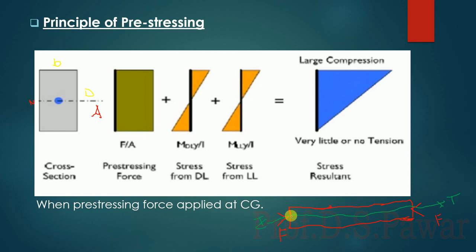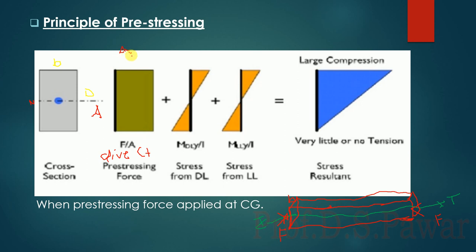The cross section of the beam has depth D and width B, so the area of the beam A equals B into D. If you want to calculate the direct stresses due to the pre-stressing force, direct stress equals force over area, that is F by A, where A equals B into D.